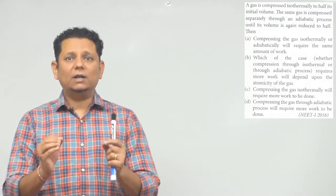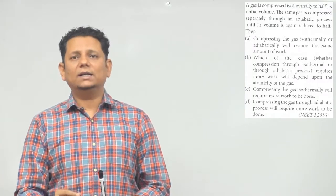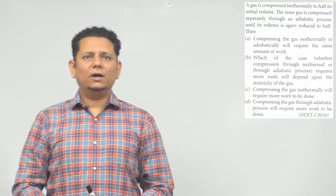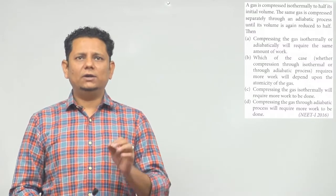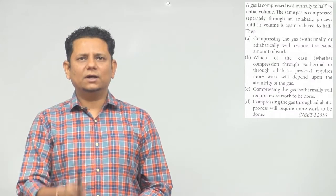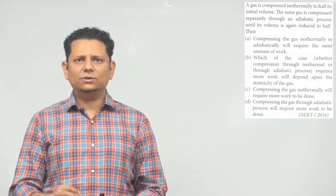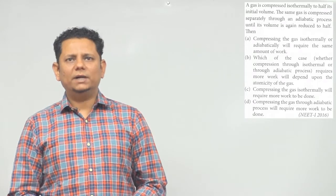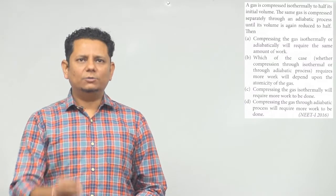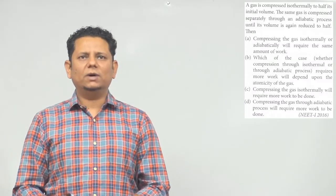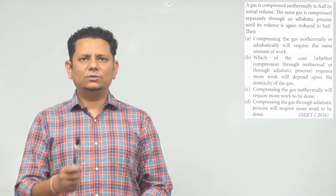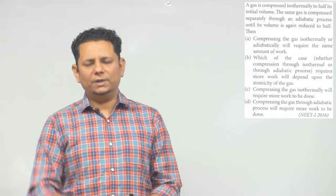Then, 4 options दे रखे हैं. सवाल पढ़ने में लंबा है, लेकिन मुश्किल नहीं है — इसको पढ़के आपको आंसर पता चल जाएगा अगर concepts clear हैं. Option A: compressing the gas isothermally or adiabatically will require the same amount of work. Option B: which case requires more work — isothermal or adiabatic — will depend upon the atomicity of the gas. Option C: compressing the gas isothermally will require more work to be done. Option D: compressing the gas through adiabatic process will require more work to be done.